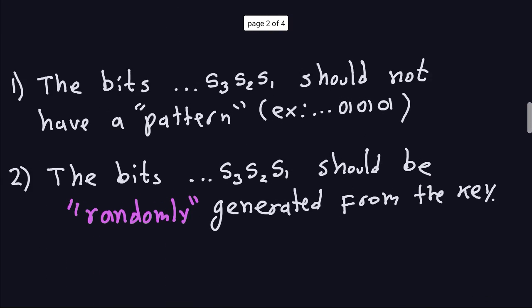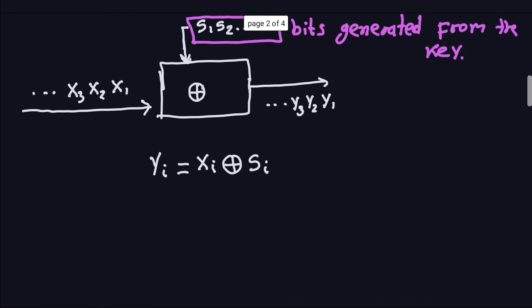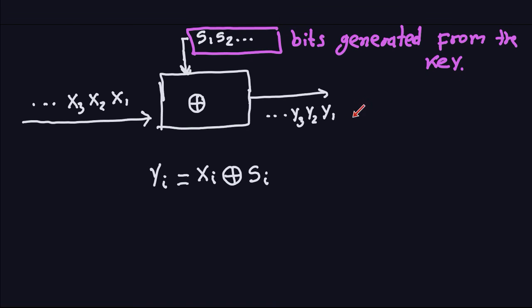So those bits should be randomly generated from the key. The big word here is random — randomly generated. You want something random there. You put in the key, and it produces a randomly generated sequence of zeros and ones. The reason you want that is because you don't want the ciphertext to have any kind of pattern that the attacker could recognize and use to crack the cipher.